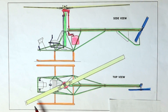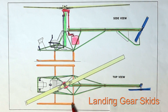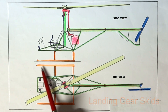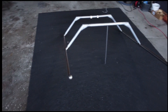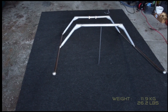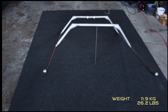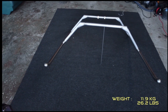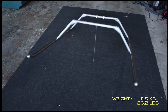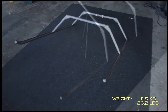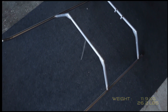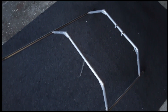We start with the landing gear skids. The purpose of the landing gear in an aircraft is to provide a suspension system during ground handling, takeoff and landing. The landing gear also needs to absorb the kinetic energy to the airframe in case of a hard landing.